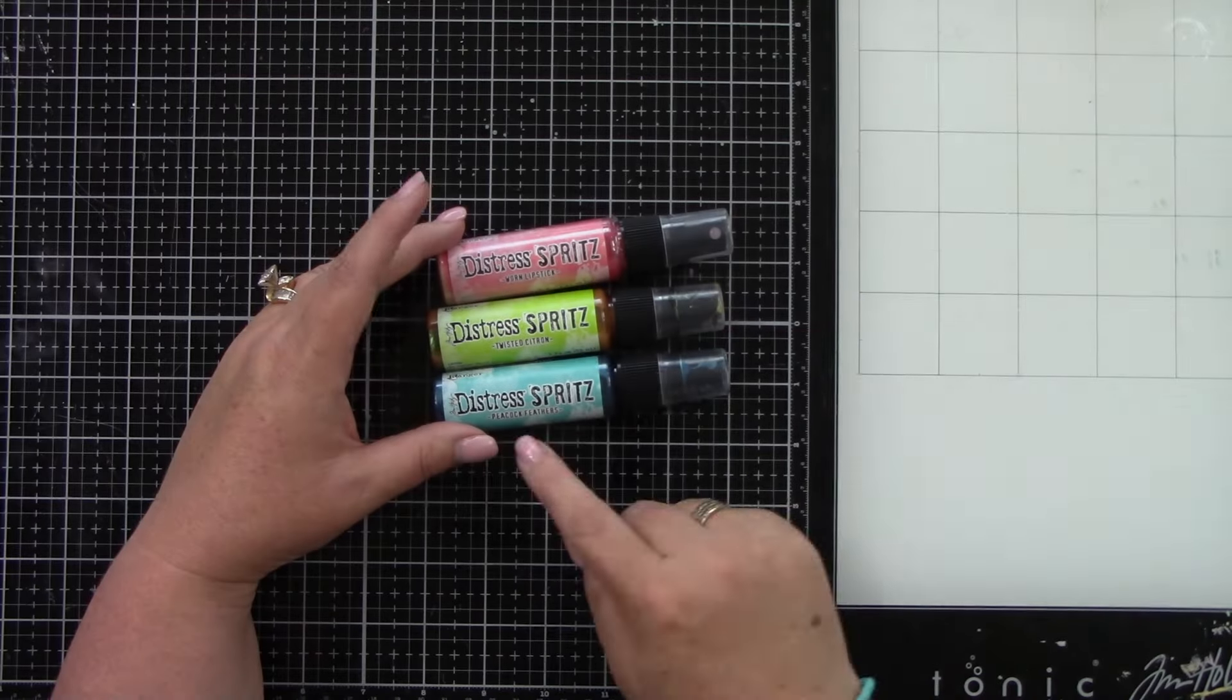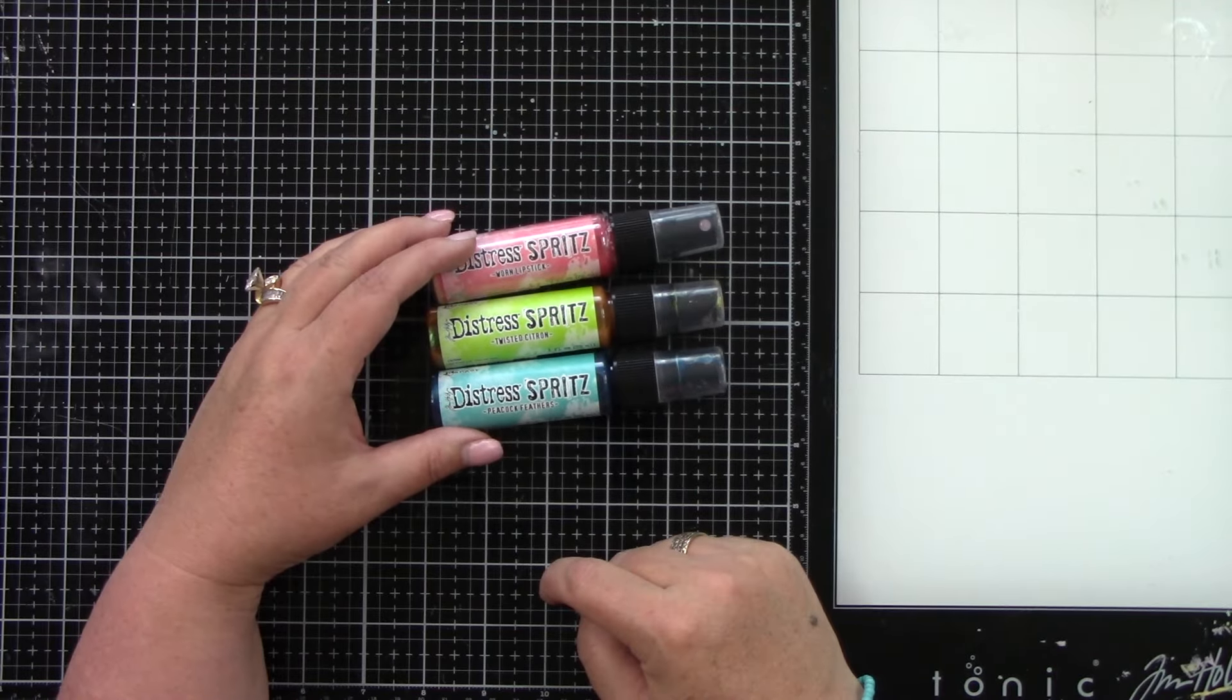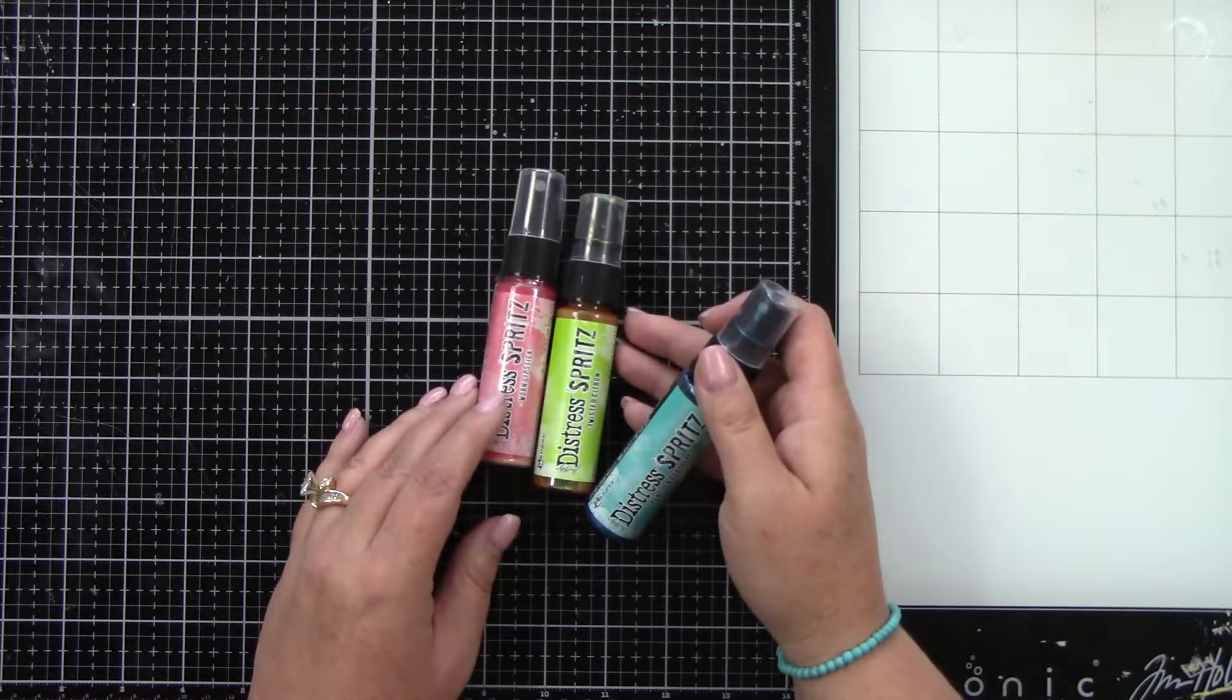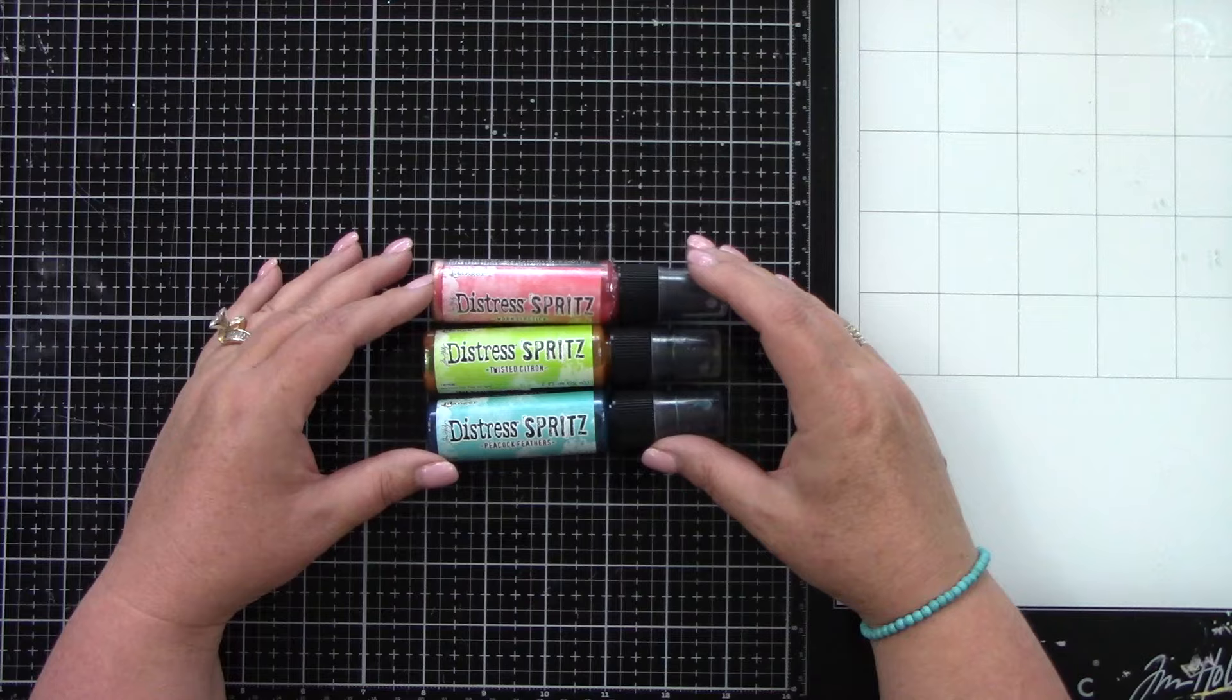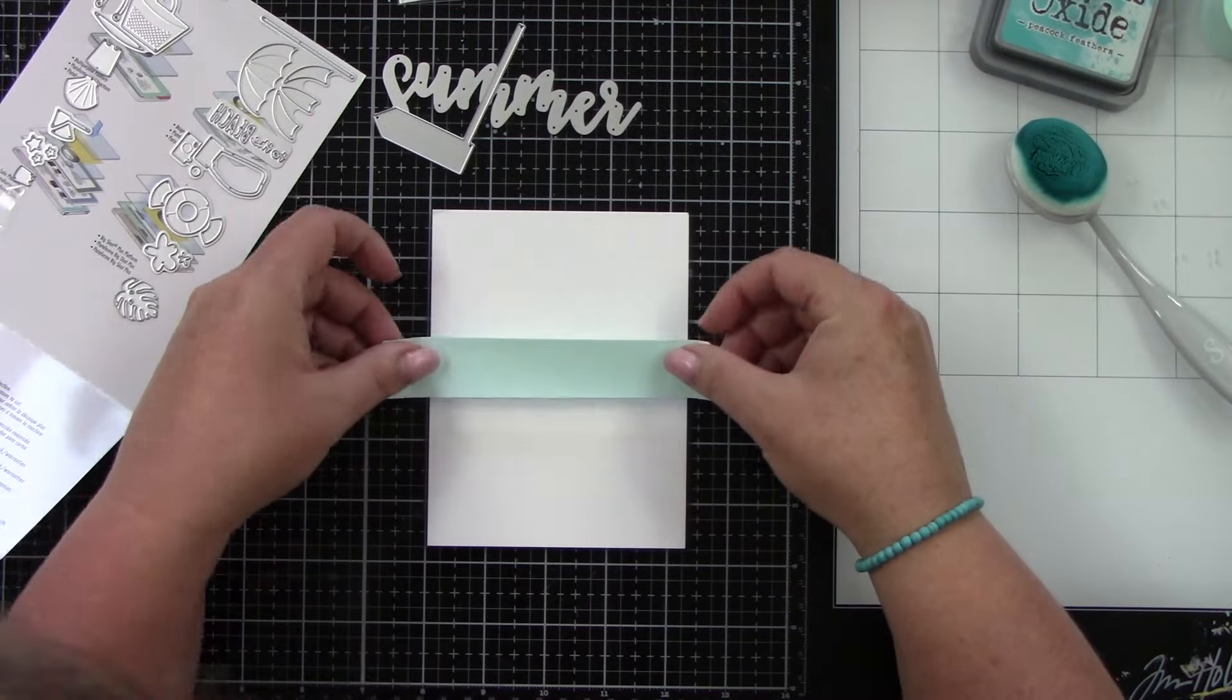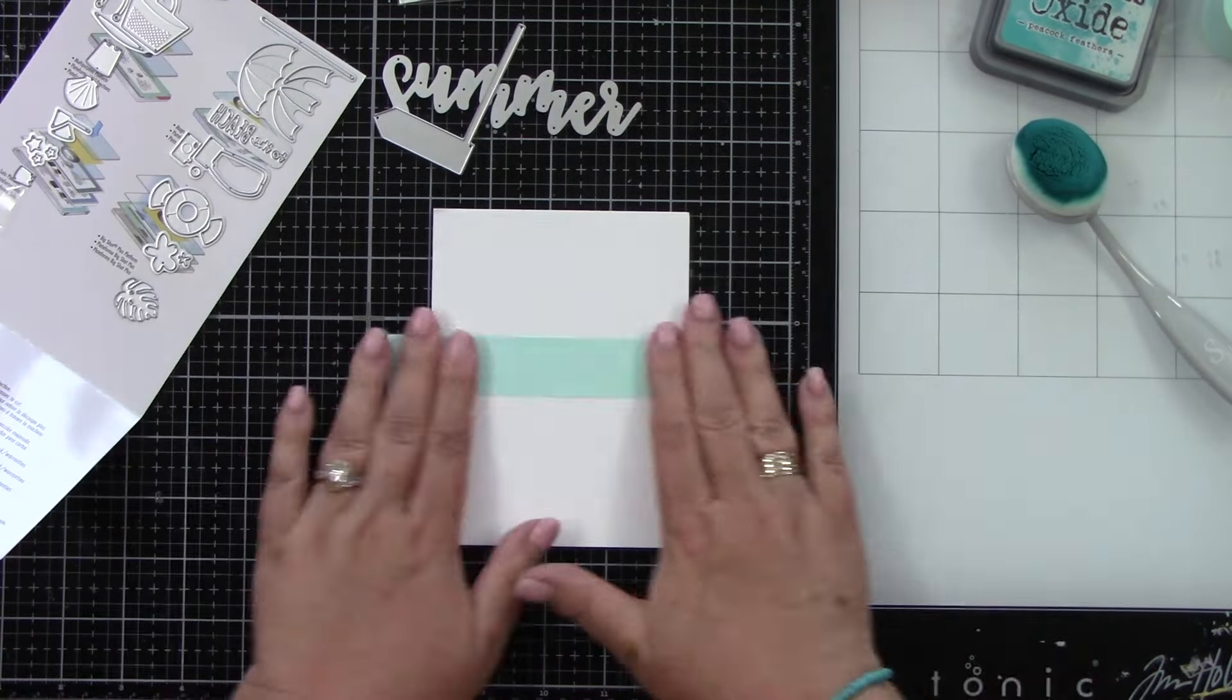I have three colors of Tim Holtz Distress Spritz: Worn Lipstick, Peacock Feathers, and Twisted Citron. This is so shiny and gorgeous when you spray this on your cardstock. It is stunning.